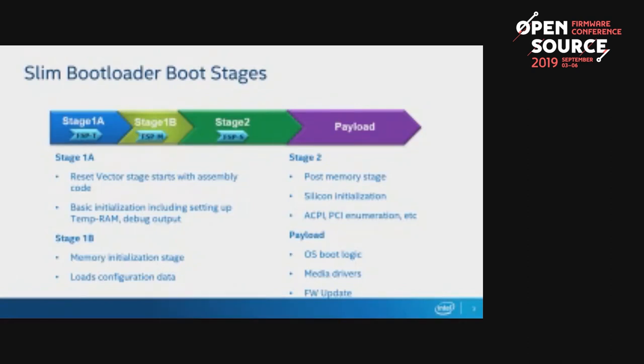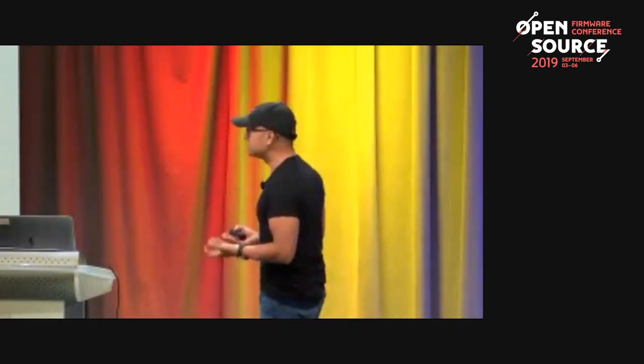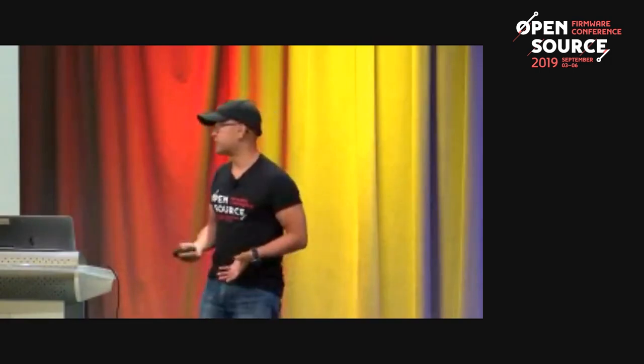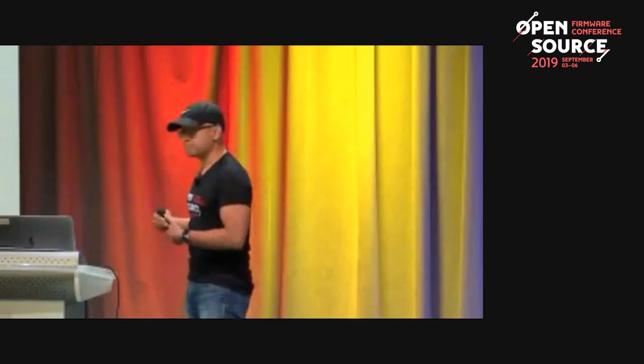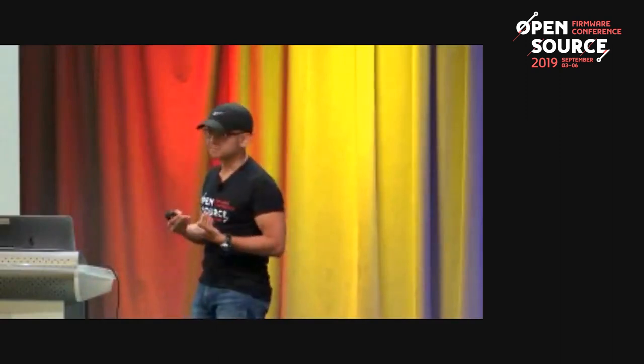With stages 1a, 1b, and 2 complete, the hardware and silicon initialization is done, and we hand over to the payload. In Slim Bootloader, we provide a sort of EFI shell-like environment, but the payload is configurable. By default, when you download from the repo, it comes with the OS loader and the firmware update payload. The payload handles the logic to hunt for the operating system on media like a hard disk or eMMC, then passes control to load the operating system. It's linear, predictable, and consumes FSP.